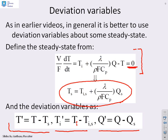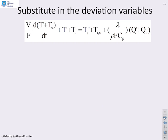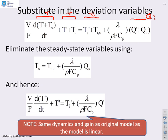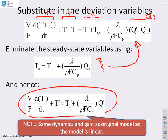If I substitute those variables in — this term is T, this term is T, this term is T_i, and this term is Q — and then eliminate what I know about the steady state using the steady state identity and cancel the relevant variables, what I end up with is the equation at the bottom. Unsurprisingly, it looks like exactly the same equation we had without the deviation variables, and that's not surprising because this is a linear model and therefore superposition applies.